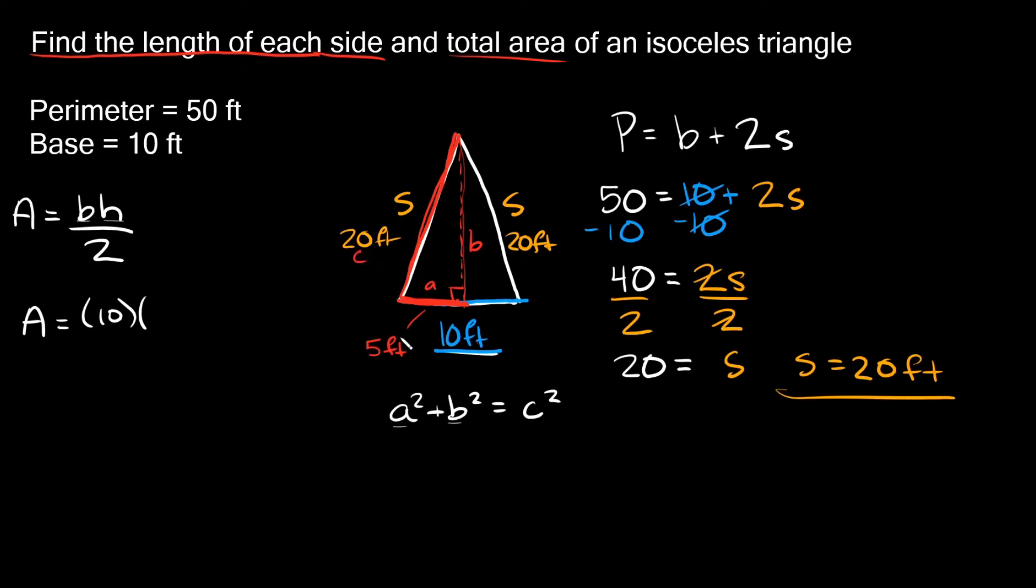So let's fill out our formula here. So A would be 5, so 5 squared, and then plus the height, which we don't know, so we just have it as B squared. And then that's equal to the hypotenuse, which is 20 squared. So 5 squared, that's equal to 25. So 25 plus B squared is equal to 20 squared, which is equal to 400.